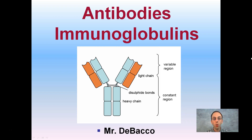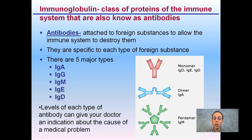Here we're going to look at antibodies or immunoglobulins — both are interchangeable terms. We see the image on the title slide with a constant region and a variable region. The variable region refers to the ends here, and shape is very important. These proteins need to bind to antigens, which is why there's a variable region — because of the different shapes these can take on.